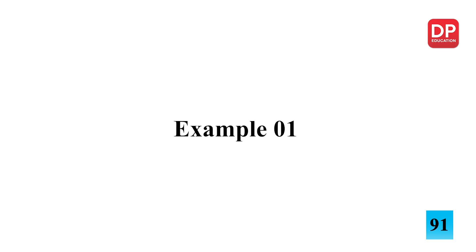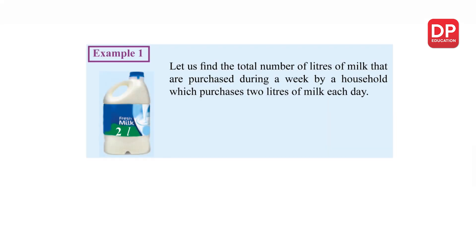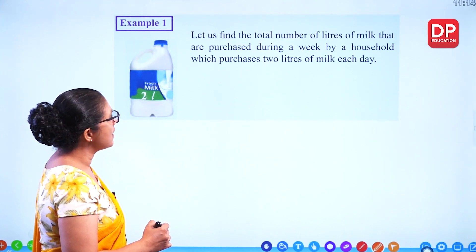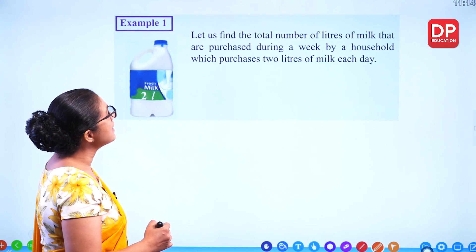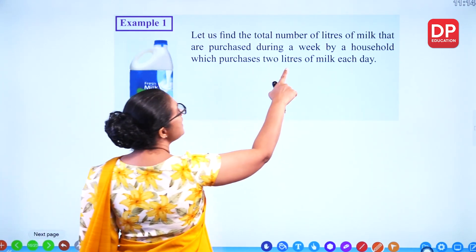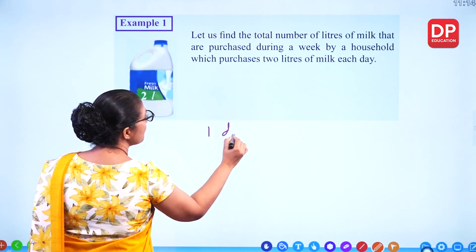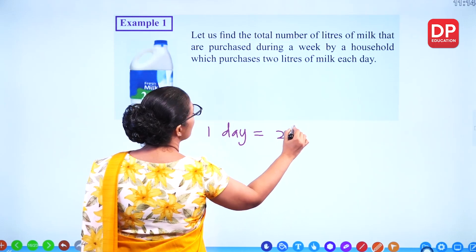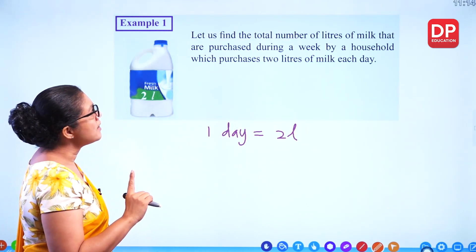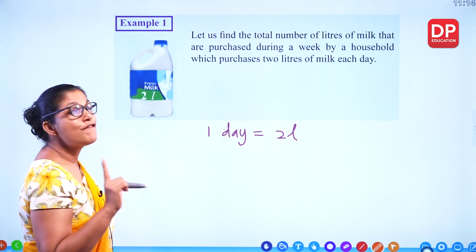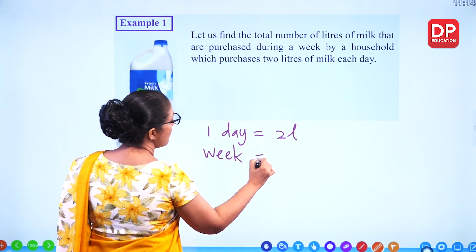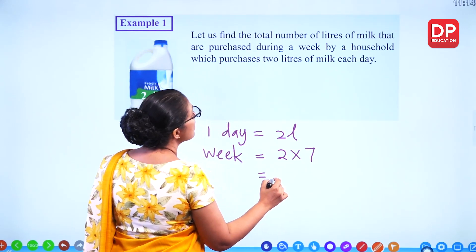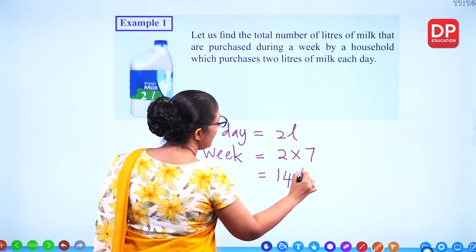Now we'll look at examples in your textbook. Example number one: find the total number of litres of milk purchased during a week by a household which purchases two litres of milk each day. So two litres for one day, and a week is seven days, so two times seven equals fourteen litres of milk.